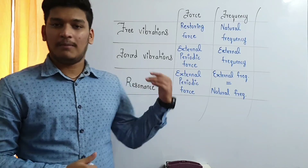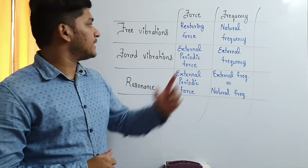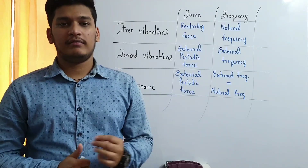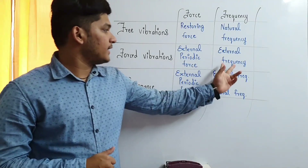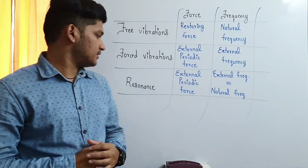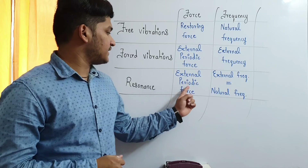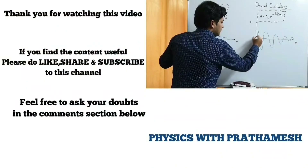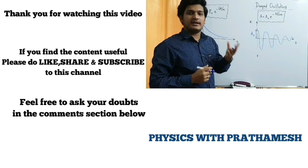To compare all three terms: in free vibrations, the force responsible is just the restoring force and the body oscillates at its natural frequency. In forced vibrations, there is an external periodic force and the body oscillates at the frequency of that external force. In resonance, there is also an external periodic force, but the external periodic force frequency must be equal to the natural frequency of the body.